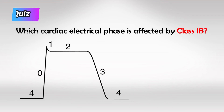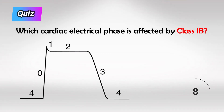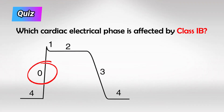All right, now let's have a quiz. Which of the following cardiac phases is affected by class 1b antiarrhythmic drugs? All right guys, that's all I have. Hopefully this helps, and thank you so much for watching.